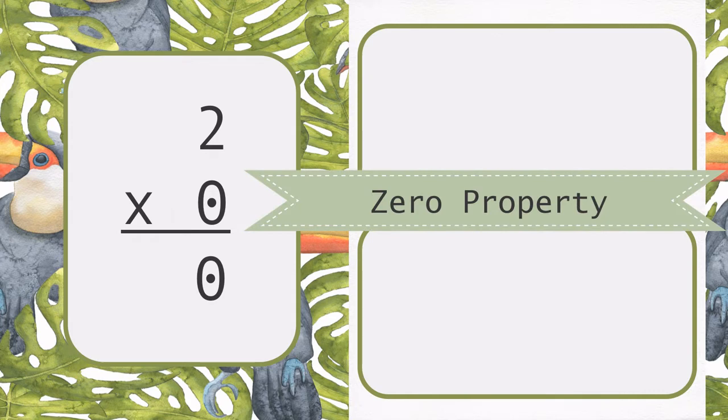The zero property states that any number multiplied by zero is zero. 2 times zero is equal to zero.